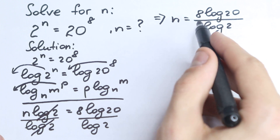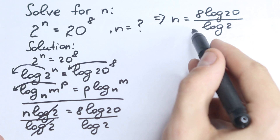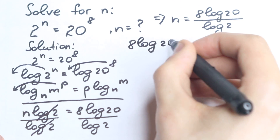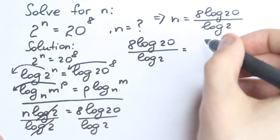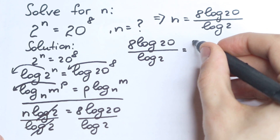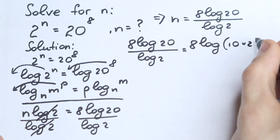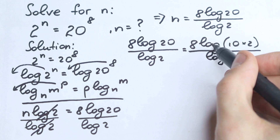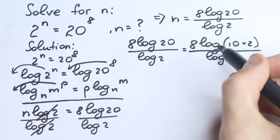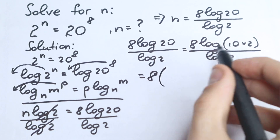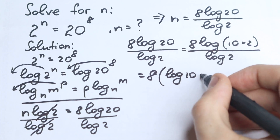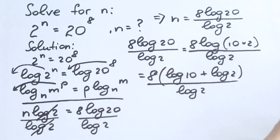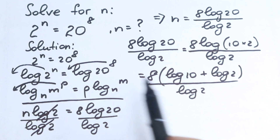This looks like a final answer, but it's not a good answer in terms of algebra because we can simplify it a little bit. We have 8 log 20 over log 2. Let's rewrite 20 as 10 times 2. Using the log product property — log of a multiplication equals the sum of two logs — we get 8 times (log 10 plus log 2), all over log 2.